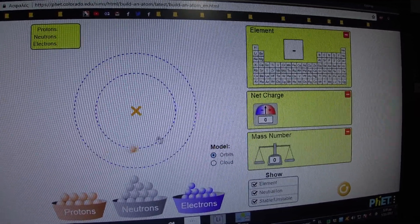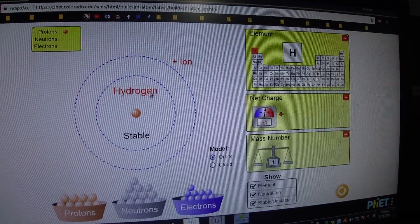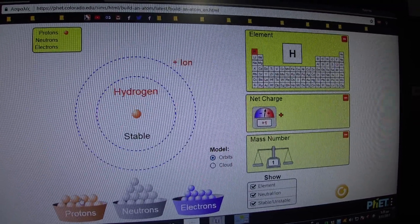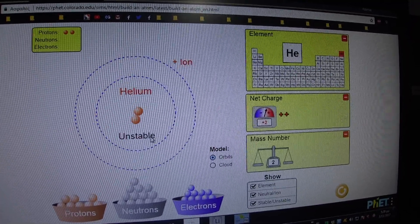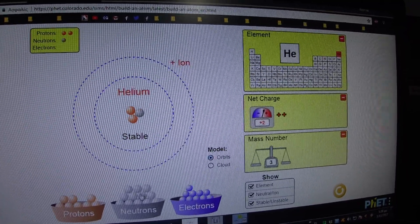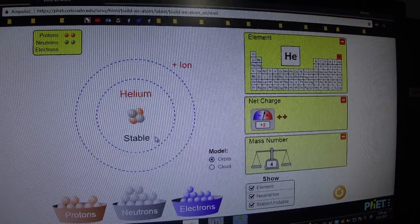We can put a proton and we have hydrogen. If we put another one, we have helium. It's unstable, so we need two neutrons to equalize the number.